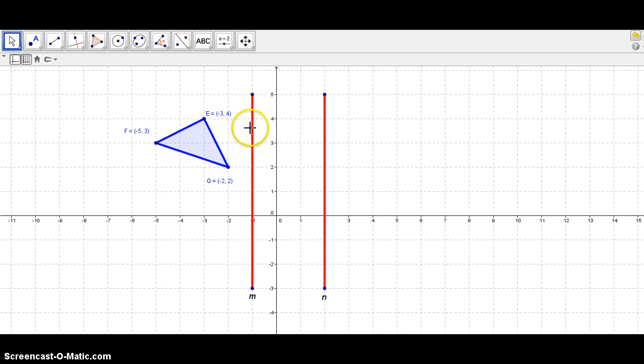If we want to reflect a shape over a line, we need to do it point by point, and so we can start with E. We need to find the vertical distance between E and the line, and that would be from E to the line, that's two units, right? One, two.